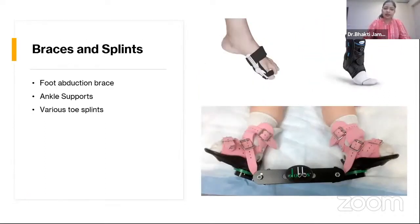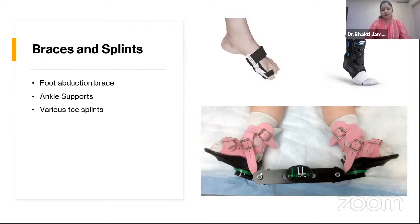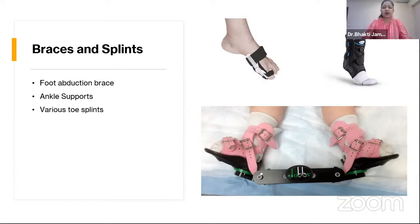Other splints and braces include the foot abduction brace, most popularly called the Steenwick brace, DP splint, or Dennis Brown splint. It is used in patients or kids with CTEV. Post-Ponseti casting, CTEV patients are given the Denis Brown splint to keep the foot in abduction, to be worn for at least 22 to 23 hours. Other lower limb supports include ankle support or ankle binders used in ankle sprains or strains, and toe splints such as hallux valgus splints for bunion deformity.